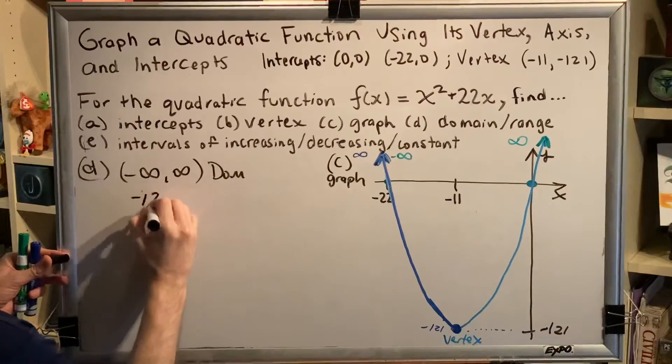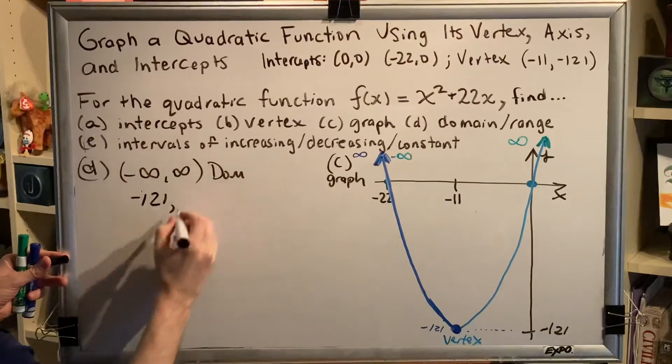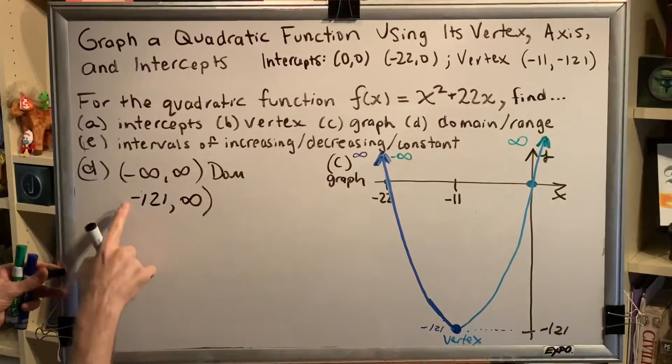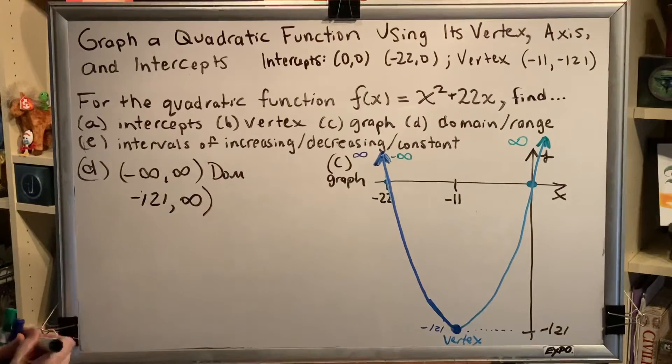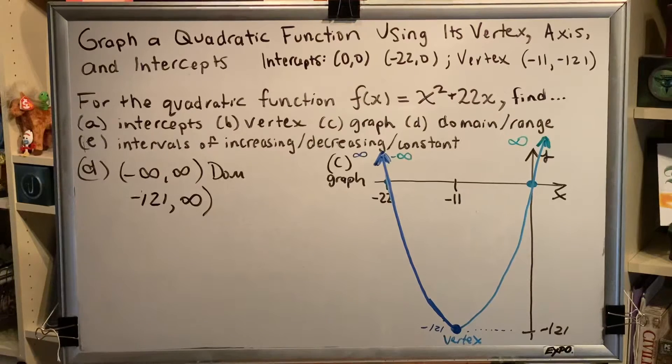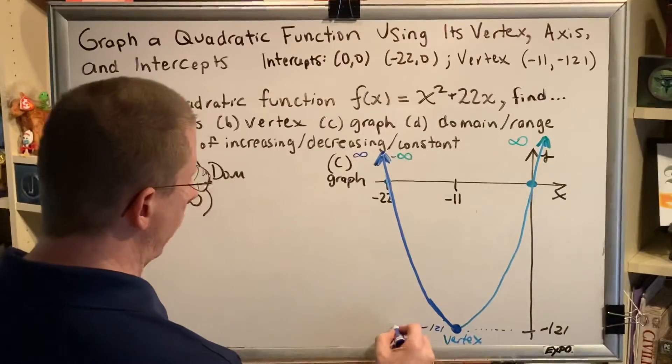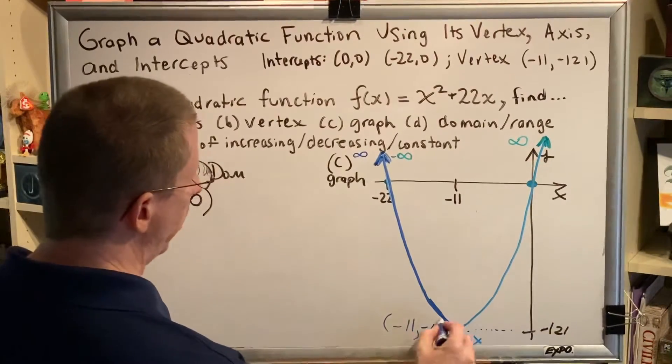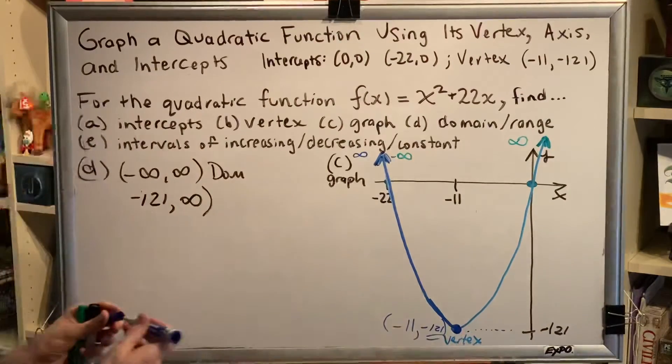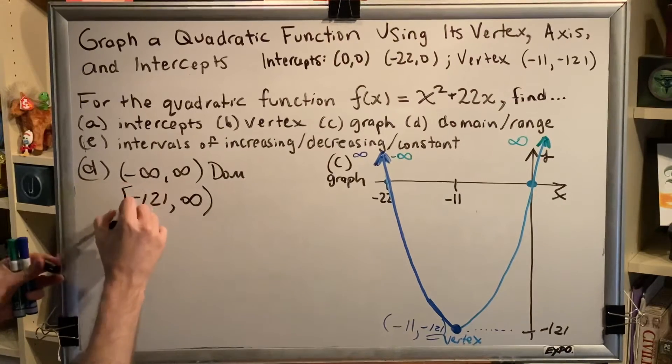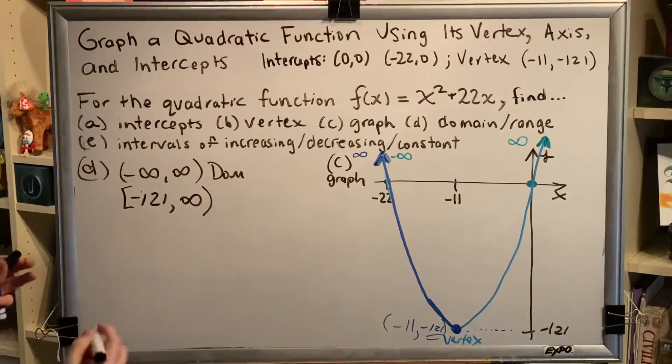And therefore, our range would be written as follows. Negative 121 comma infinity. Infinity and negative infinity always get parentheses. What sort of symbols should we put here? Well, think about the definition. Range. The definition of range is a collection of all of the y-coordinates. This point right here is the point negative 11 comma negative 121. And it has a y-coordinate of negative 121. Therefore, negative 121 belongs in the range. Therefore, we must use a bracket to include it.